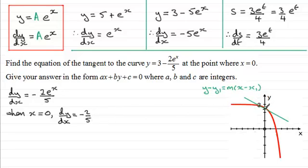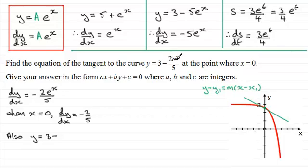We also need to find the y value where the curve crosses the y-axis, that is when x equals 0. So y equals 3 minus 2e to the power 0 over 5. Since e to the power 0 is 1, it's just 3 minus 2 fifths. Three whole ones is 15 fifths, take away 2 fifths gives 13 fifths.